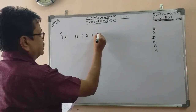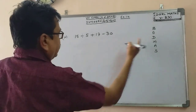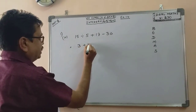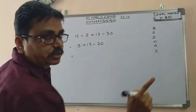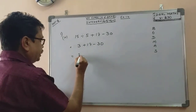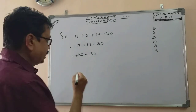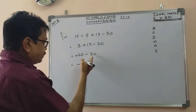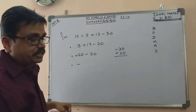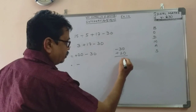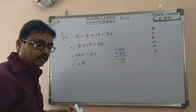Next example: 15 divided by 5 plus 17 minus 30. This is the division step: 15 divided by 5 is 3. Then addition: 3 plus 17 is 20. Then subtraction: 20 minus 30 equals minus 10. So the answer is minus 10.